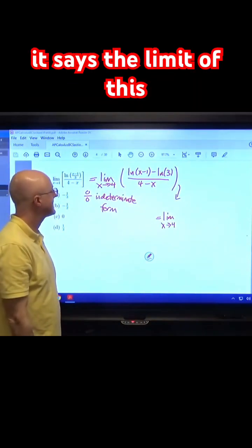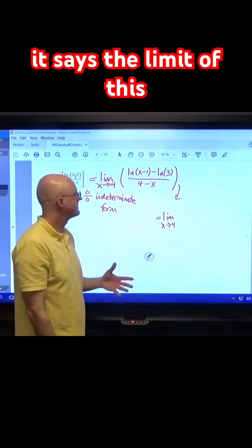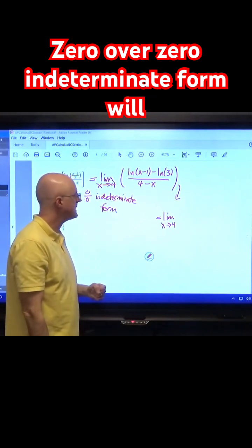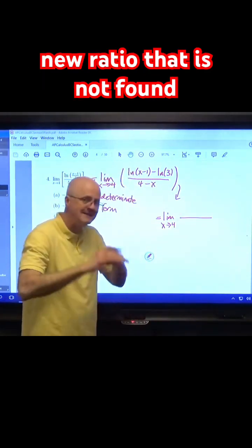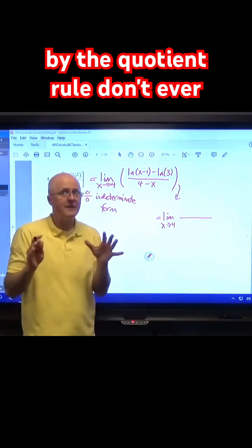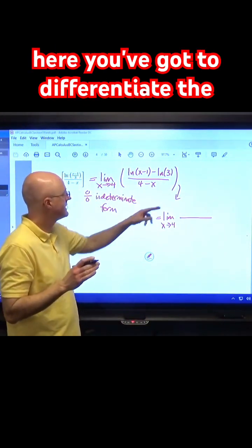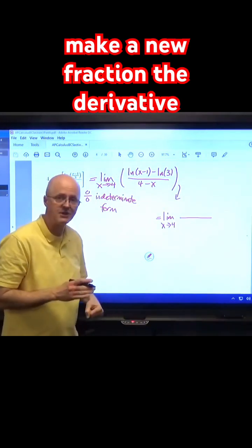And what does L'Hopital's Rule say? It says the limit of this 0 over 0 indeterminate form will equal the limit of a new ratio that is not found by the quotient rule. Don't ever think you're using the quotient rule here. You've got to differentiate the top and the bottom individually and make a new fraction.